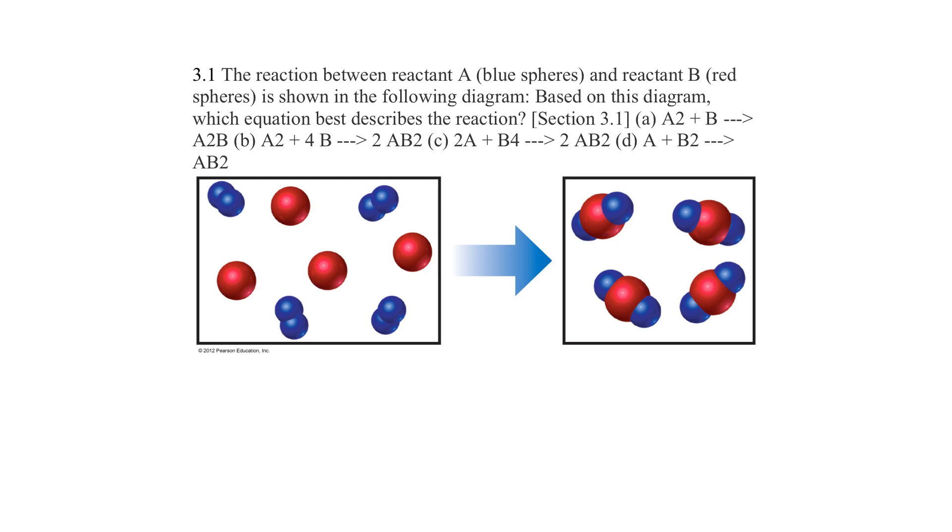Okay, so we're in section 1 here. So A2, meaning A sub 2, plus B, yields A sub 2 B.